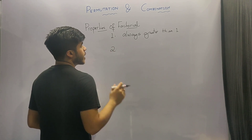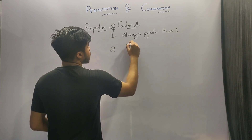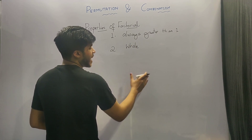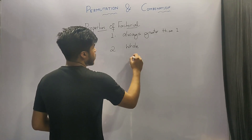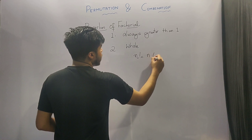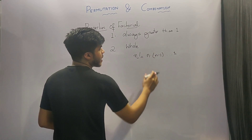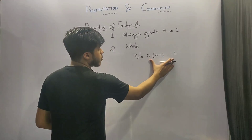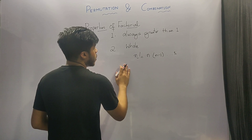The second property of factorial is that factorial of a number is always a whole number. So factorial of a number can neither be negative nor a fraction, because n factorial is a product of all the positive integers from n down to 1, and there is neither a fractional part nor a decimal part between these product of numbers. So the factorial of a number is always a whole number.